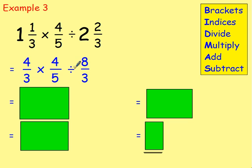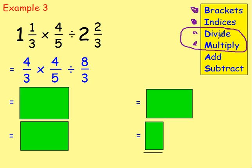Are there brackets? No. Powers or roots? No. We've got a multiply and a divide. But because it's only divide and multiply, we don't do divide first — we do it in order from left to right. So we would do the multiply first, then the divide. The divide doesn't come before the multiply; they go together and you do them from left to right.